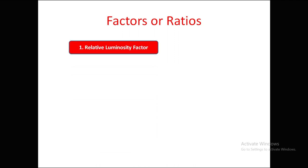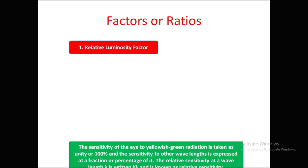The relative luminosity factor: the sensitivity of the eye to yellowish-green radiation is taken as unity (100% sensitivity). The sensitivity to other wavelengths is expressed as a fraction of unity. The relative sensitivity at wavelength lambda is written as k-lambda.